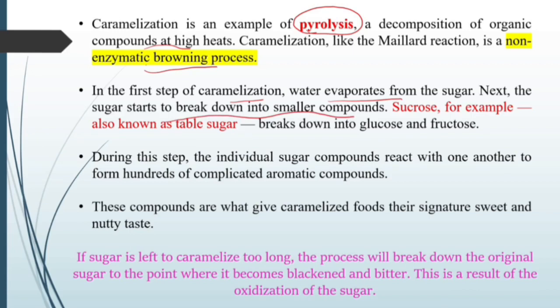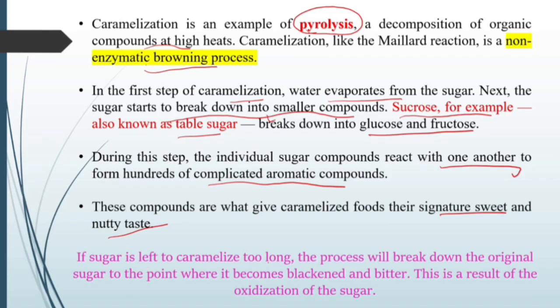Next, the sugar starts to break down into smaller compounds. In simple terms, the disaccharide converts into monosaccharides — for example, sucrose, known as table sugar, breaks into glucose and fructose. During this step, the individual sugar compounds react with one another and form hundreds of complicated aromatic compounds. These compounds give caramelized foods their signature sweet and nutty taste. However, if the sugar is left to caramelize too long, it will blacken and become bitter due to oxidation of the sugar.